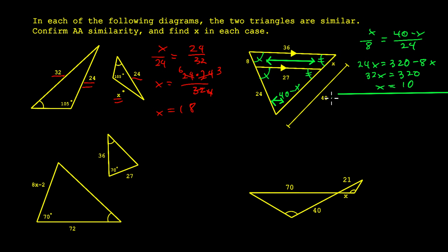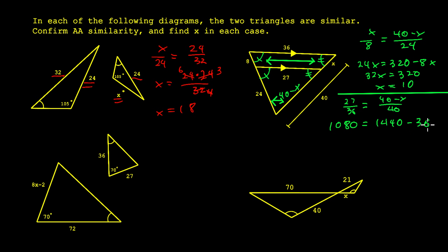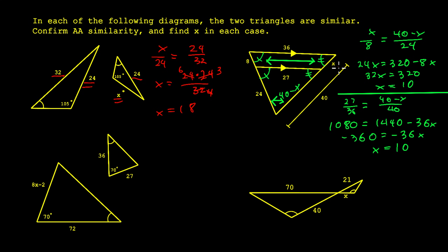The other solution uses two similar triangles — the small triangle inside the big triangle. We do 27 over 36 equals 40 minus X over 40. So 40 times 27 is 1080, equals 36 times 40 minus 36X, which is 1440 minus 36X. Moving terms gives negative 360 equals negative 36X, and again X equals 10. The first method compares a piece to a piece along the transversals; the second compares whole side to whole side using the two similar triangles.